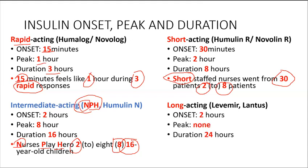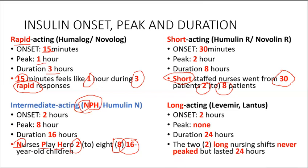For long acting insulin, the onset is 3 hours and the duration is 24 hours — there is no peak. To remember that, use the phrase: 'Two long nursing shifts never peaked but lasted 24 hours.' Long tells you it's long acting, never peaks means no peak, and 24 is the duration.